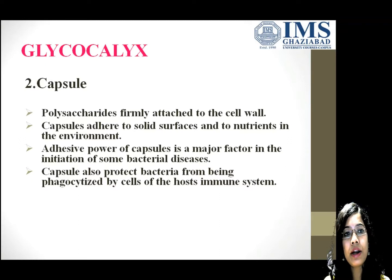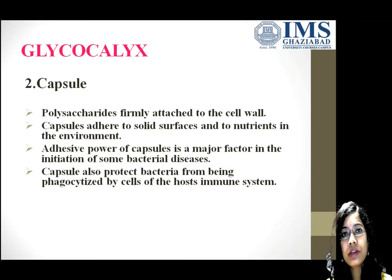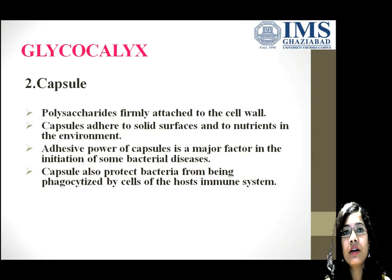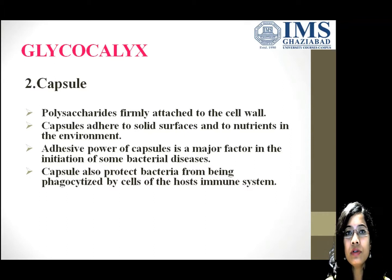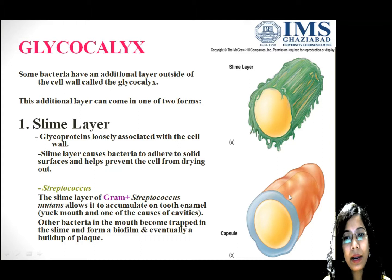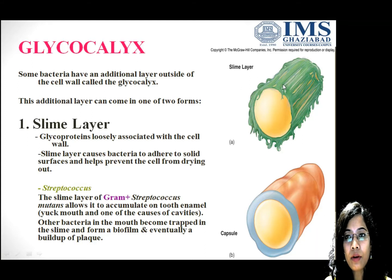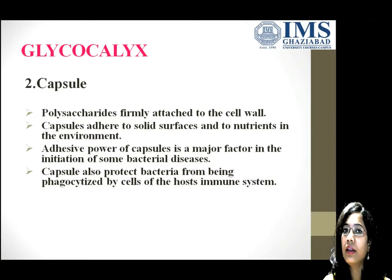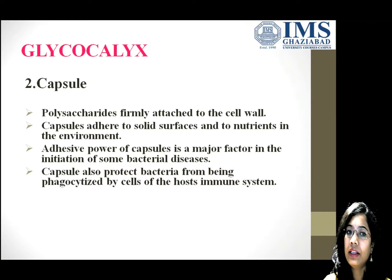Next is the capsule. The capsule is a polysaccharide layer firmly attached to the cell wall. Capsules also adhere to solid surfaces and provide anti-nutrients in the environment. The capsule is a major factor in the initiation of bacterial disease. The capsule also protects bacteria from being phagocytized by cells of the host immune system. You can see the difference: the slime layer is a looser structure and the capsule is a compact layer. The slime layer is made up of glycoproteins and the capsule is made up of polysaccharides. This completes our study of the outer and internal structure of the prokaryotic cell. Thank you friends.